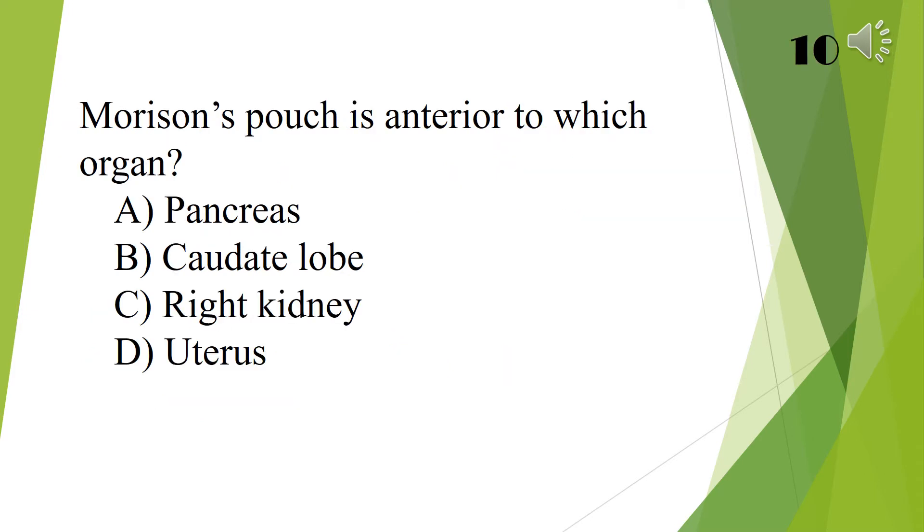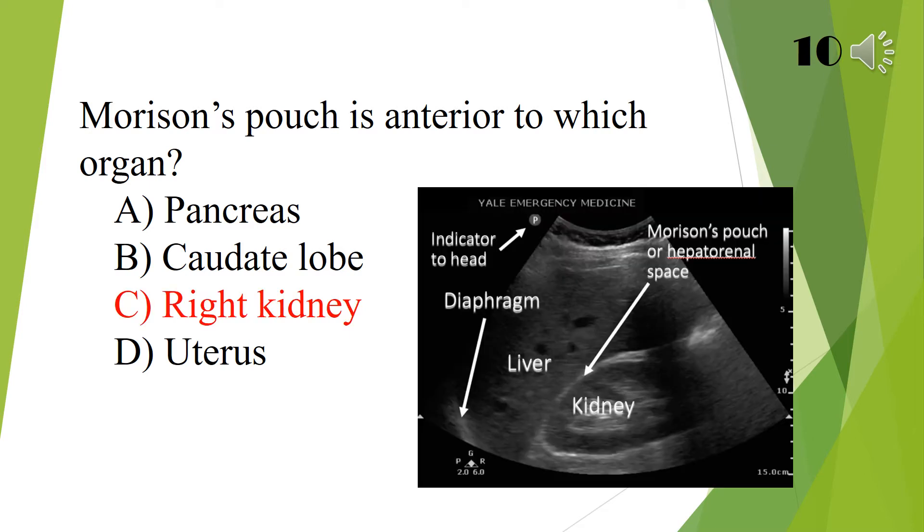Morrison's pouch is anterior to which organ: pancreas, caudate lobe, right kidney, or uterus? The answer is right kidney.